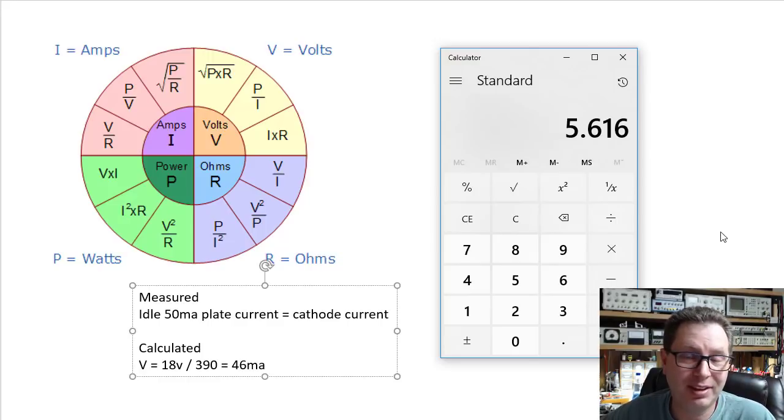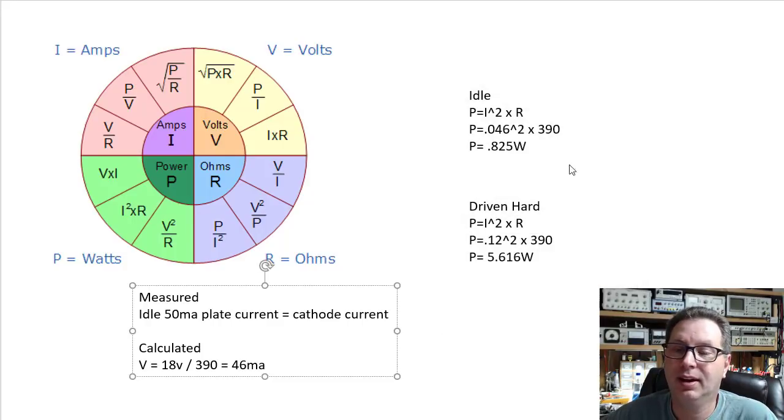Now, I don't think you'll drive this thing to 120 milliamps, but I do think driving it to 80 or 100 milliamps before distortion is quite feasible. Especially if you looked at the load line, it kind of shows that. So, kind of hid the math here from you, but you can see at idle this thing is putting out about 0.825 watts. If you really drove it hard, you might get up into the 5 watt range.